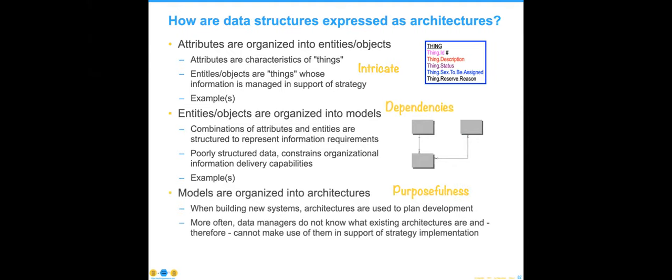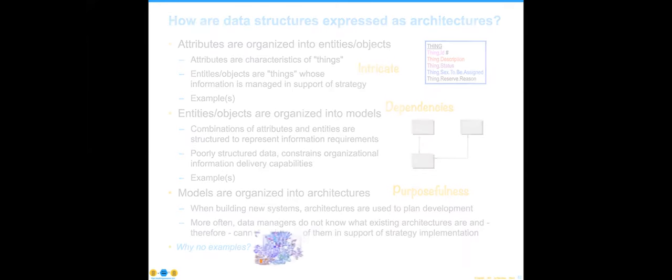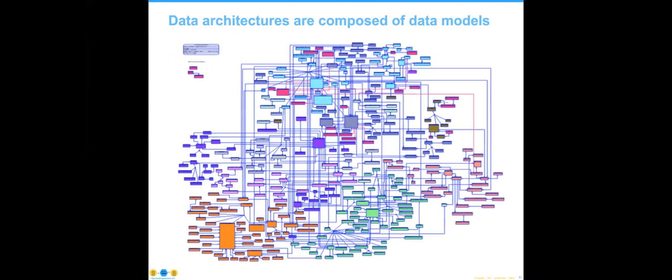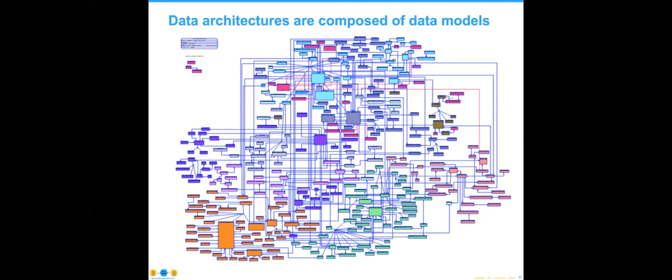We tend to see things as attributes, dependencies, and organized into models, and we get to the architecture. A data model is always incomplete if you don't have the definitions of those pieces — which is a good reason to maintain that centrally, so that when somebody reuses a term across your data modeling environment, everyone is on the same sheet of paper. Why aren't there any examples of enterprise architecture models? Because they're really big and really complex, and we have to rely on patterns.